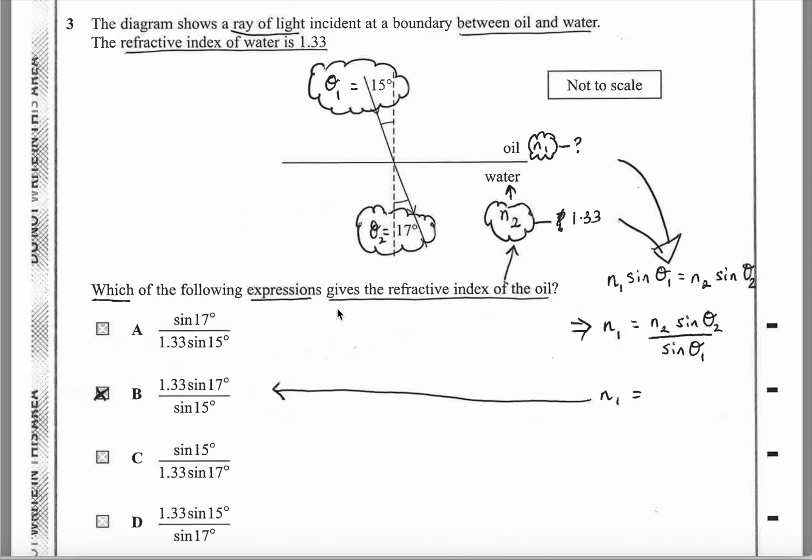The equation is N1 sine theta 1, where N1 is oil, sine theta being the angle to the normal, must be equal to N2 sine theta 2. That's the A-level equation for refraction. We know N2, theta 2, and theta 1. The only one we don't know is N1. Change the subject of the equation. N1 will be N2 sine theta 2 over sine theta 1. Put the numbers in and you'll find the answer is B.